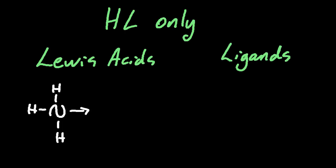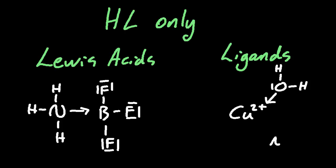So Lewis acids are electron paired donors. And ligands can make a dative covalent bond with a central transition metal, atom or ion.